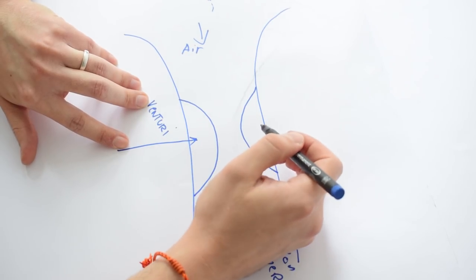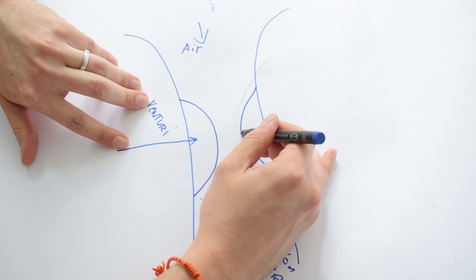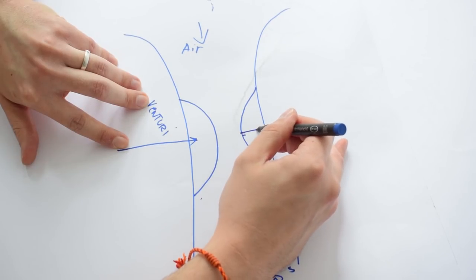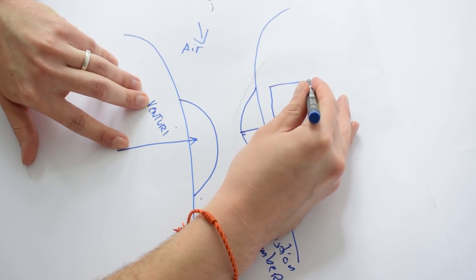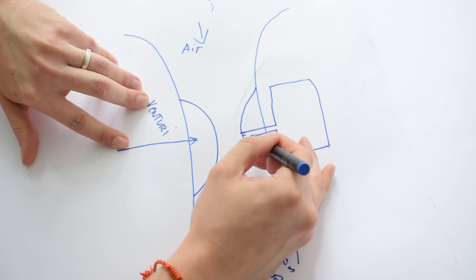At some point in the venturi, usually at the narrowest point, we are going to have a hole and that hole is going to lead to a fuel reservoir.